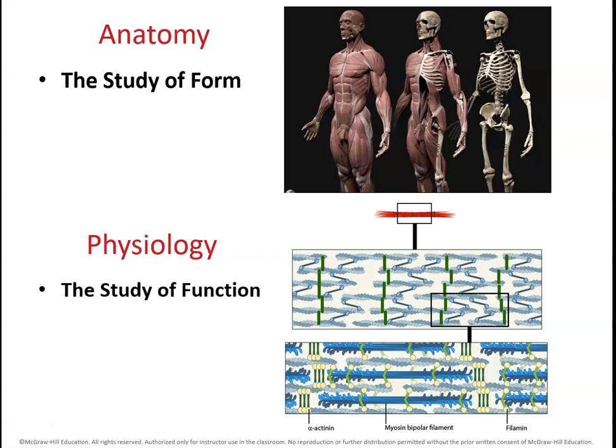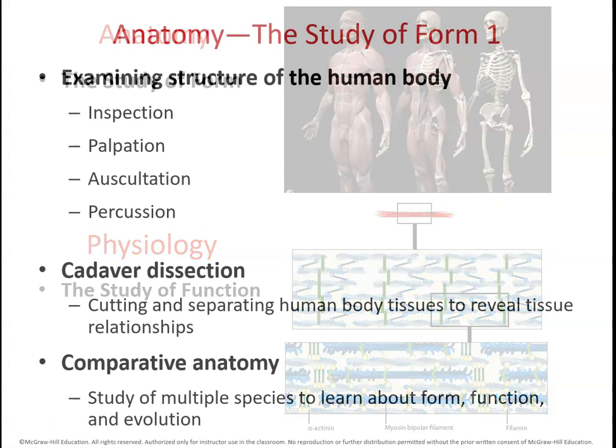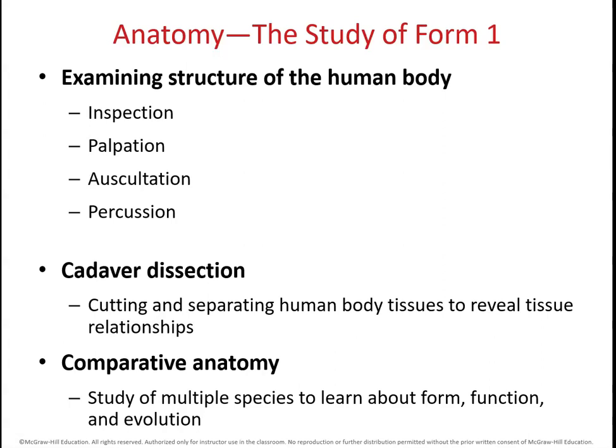Anatomy and physiology are generally studied together — it's very difficult to separate these two disciplines. There are generally four ways that we can examine the human body. First, we can just look at things; we call this inspection. We can feel things with our hands, which is called palpation. We can listen to the sounds of the body, which is auscultation. And finally, we can tap on different parts of the body to feel for resistance, air, fluid pockets, or scar tissue, and we call that percussion.